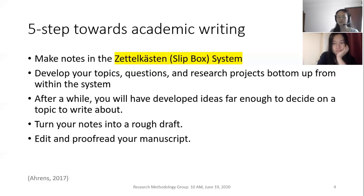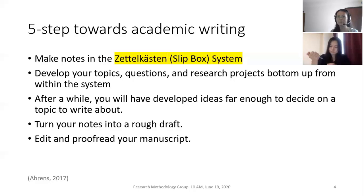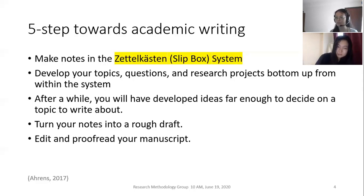So now let's go to the five steps towards academic writing. He recommended you should start reading and already making notes from literature — paper one, two, three, four — just read. Then you take a lot of notes, build up your slip box system, and then you develop your topics, questions, or research projects bottom-up within your note system. After a while, you build so many notes that you can directly write from your notes system. That's the approach he recommends.